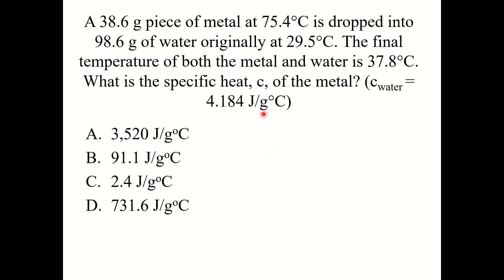Let's try a knowledge check question. A 38.6 gram piece of metal at 75.4 degrees Celsius is dropped into 98.6 grams of water originally at 29.5 degrees Celsius. The final temperature of both the metal and water is 37.8 degrees Celsius. What is the specific heat C of the metal? The answer is 2.4 joules per gram degrees Celsius.